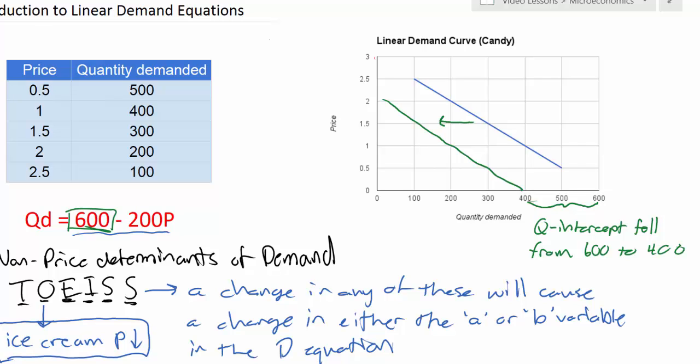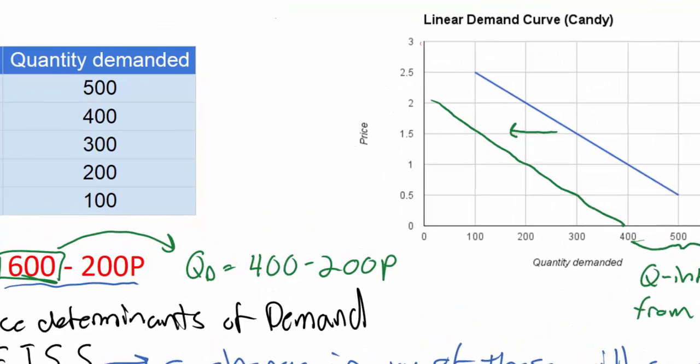How does this affect our demand equation? Well, when the A variable decreases, we get a new demand equation of Qd equals 400 in this case, minus 200P. What have we done?